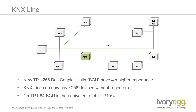The KNX standard was updated quite a few years ago with a new electronics design for bus coupler units — that's the electronics that connect a KNX device to the bus. Called TP1256, devices using this new standard have four times higher impedance than the original KNX devices, meaning they have a reduced data load on the bus.